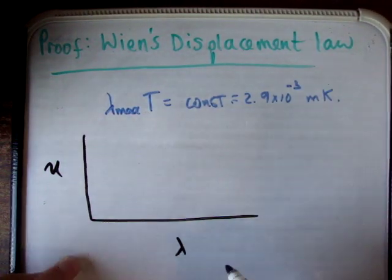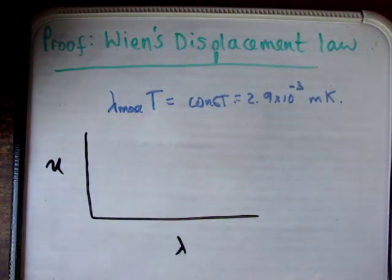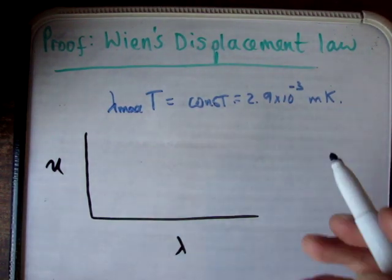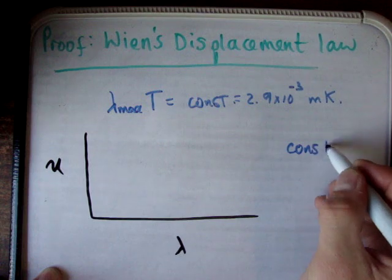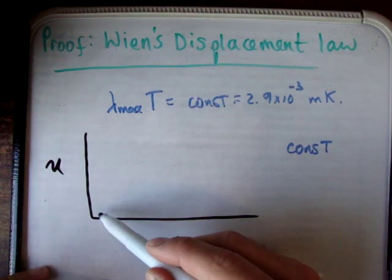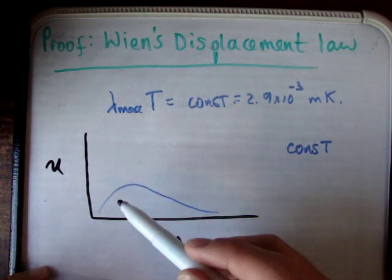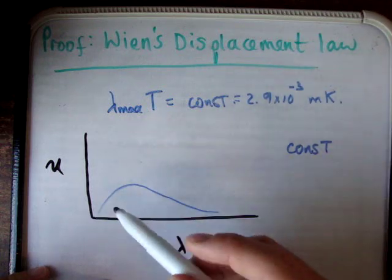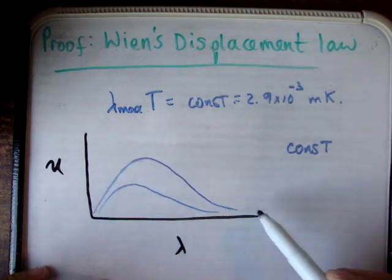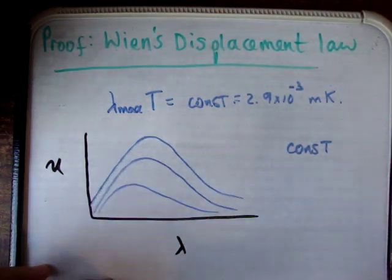And on the bottom, on the x-axis, you have lambda, and you're plotting energy density versus lambda at a constant T, constant temperature. You'll find that the curve might look something like this. That might be one value.